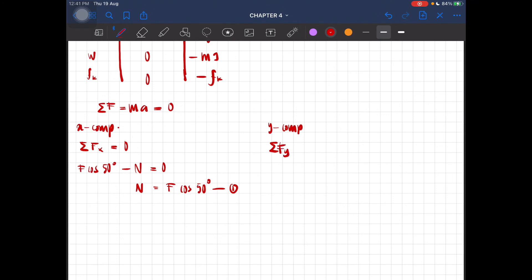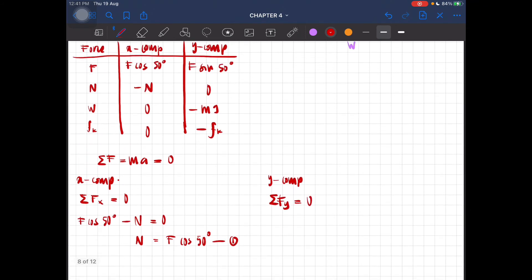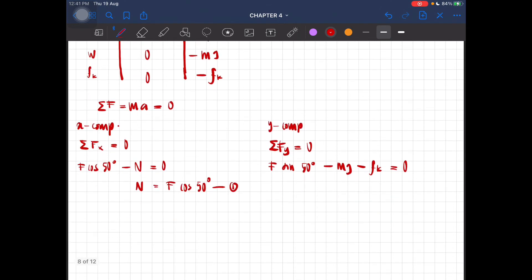Total F at y is equal to zero. So we have F sin 50 degrees minus mg minus Fk equal to zero. Okay, so from here we can let F sin 50 degrees minus 10 minus mu k times N equal to zero. Okay, so this is your equation two.